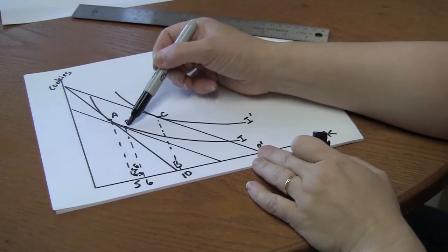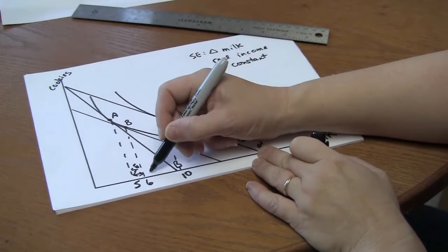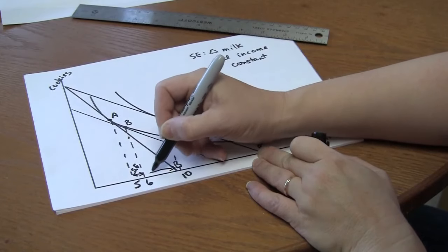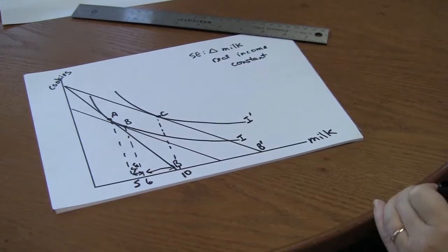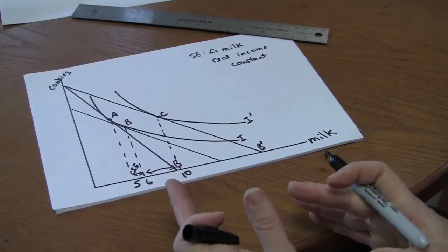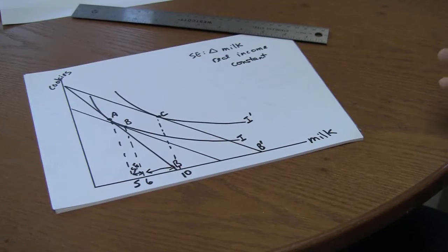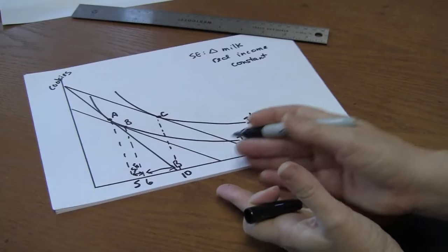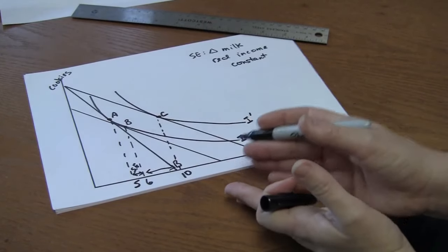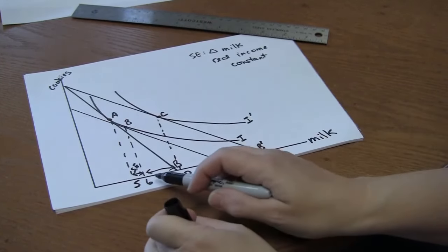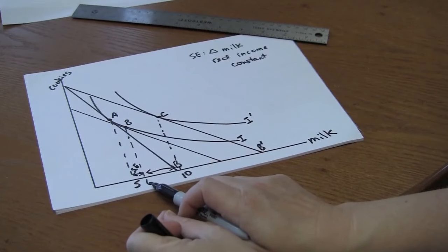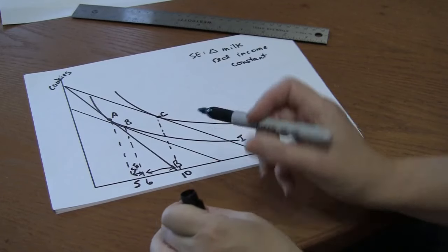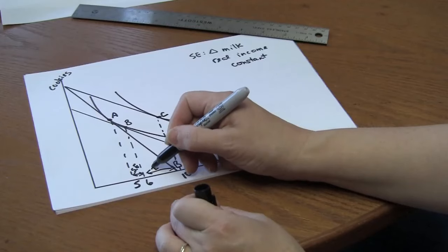The movement from B to C is the impact of falling prices through the increase in consumers purchasing power. Because milk is now cheaper, the consumer has more purchasing power, their real income has increased. That increase in real income causes this increase in milk consumption from six to ten cups. That's the income effect.